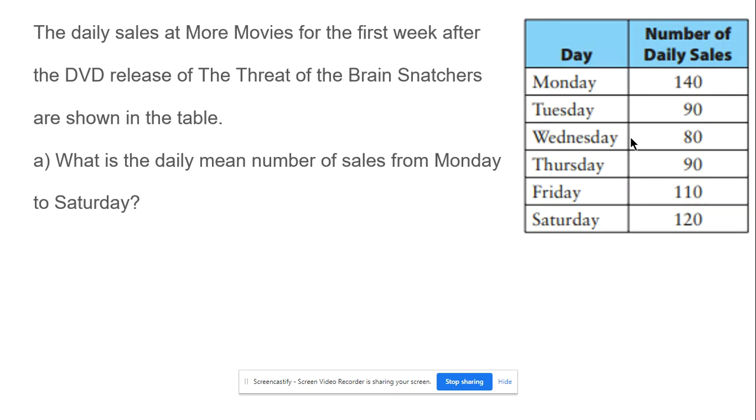Let's do this problem. We have daily sales at More Movies for the first week of the DVD release shown in the table. What's the daily mean for sales from Monday through Saturday? That's six days. We add them up to get the total first. When we add them up: 140 + 90 + 80 + 90 + 110 + 120 = 630 total sales. Then 630 divided by 6 days equals 105 per day.